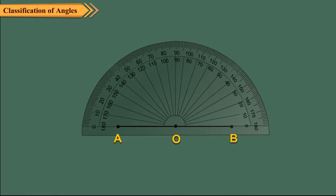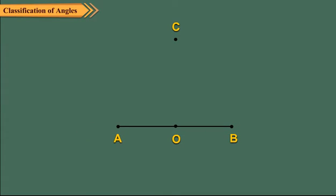We draw an angle of 90 degrees at point O using a protractor. Since angle BOC is equal to 90 degrees, CO is perpendicular to AB. We can also draw perpendicular lines using set squares instead of the protractor.